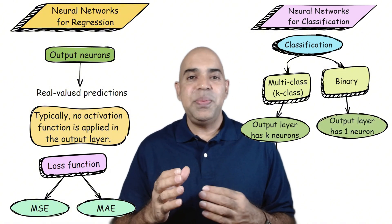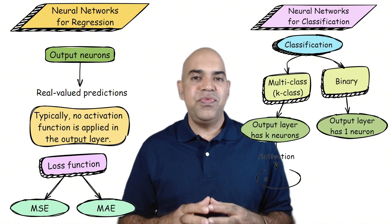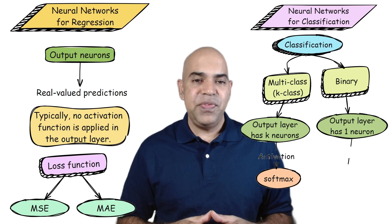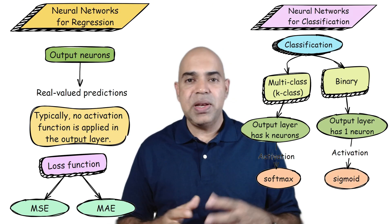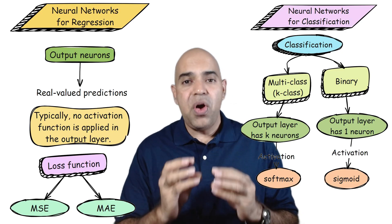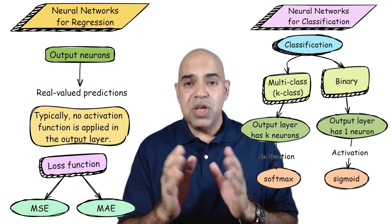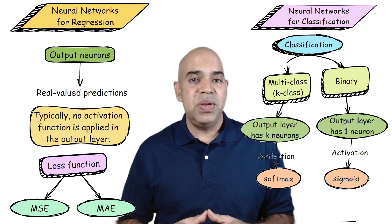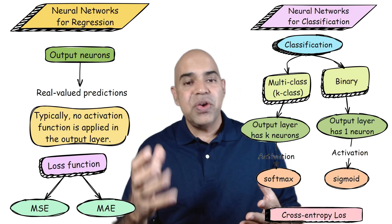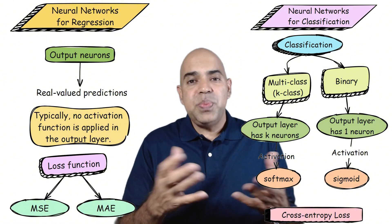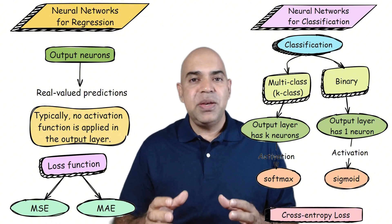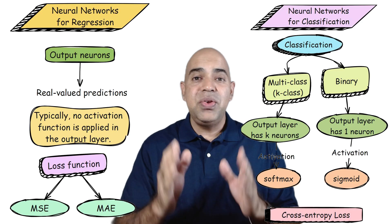The output layer typically uses the softmax function for multi-class classification, or sigmoid function for binary classification to convert the raw classification logits into probabilities. The loss function used in classification problems is typically cross-entropy loss, which measures how well the predicted probabilities match with the true class level.